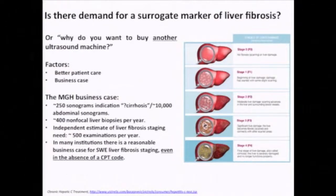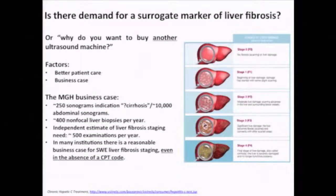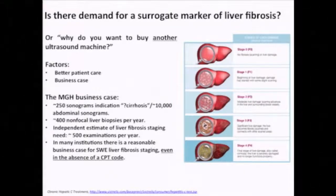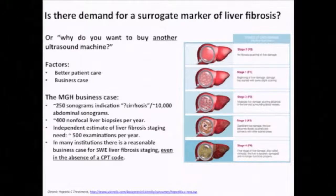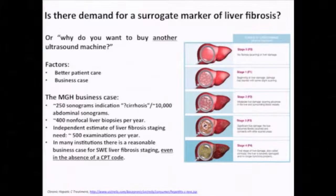How do we establish a situation where there's actual demand for a non-invasive surrogate marker of liver fibrosis? This is the business case slide — why do you want to buy another ultrasound machine? I went to hospital administration to say there's a great new ultrasound machine that I think can do this. They asked: why do you want to buy it? I said patient care would be better. They said the evidence isn't very strong — what's the business case? It's important for radiologists in hospital practice to realize there is a legitimate business case for liver elastography that has nothing to do with actual reimbursement for liver elastography.